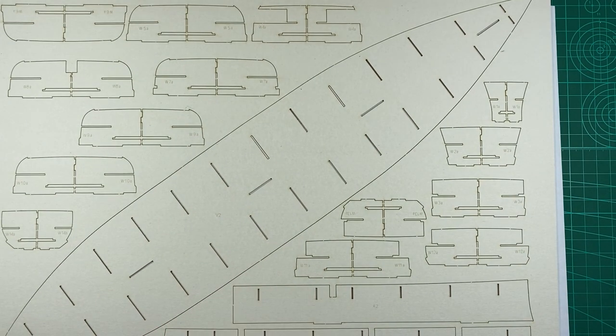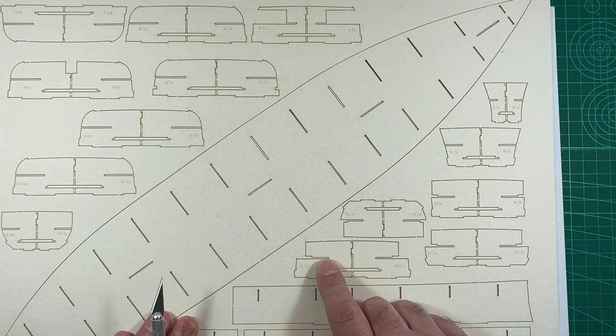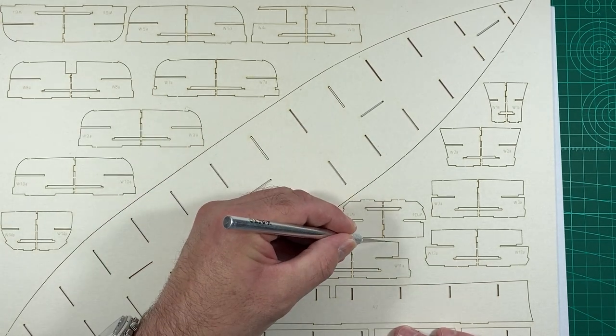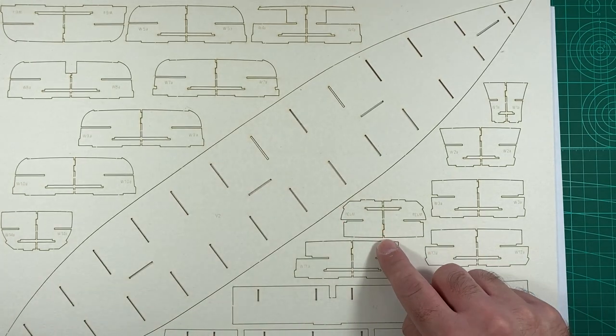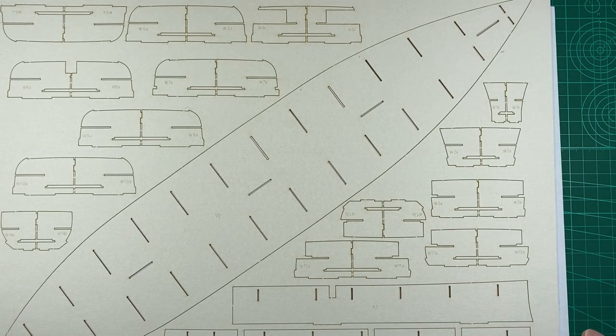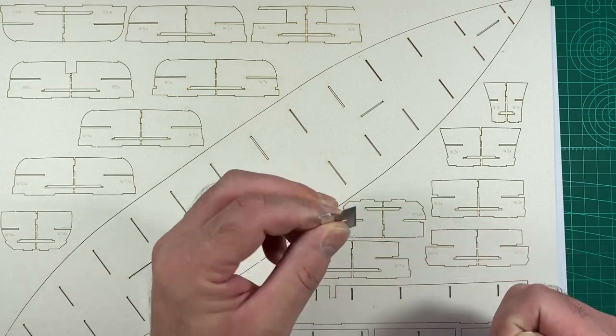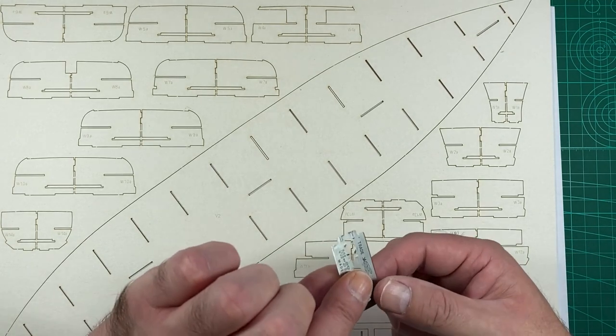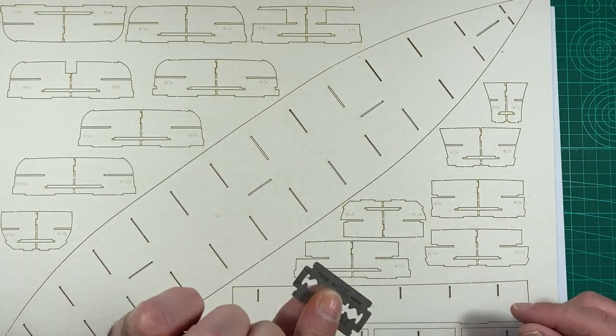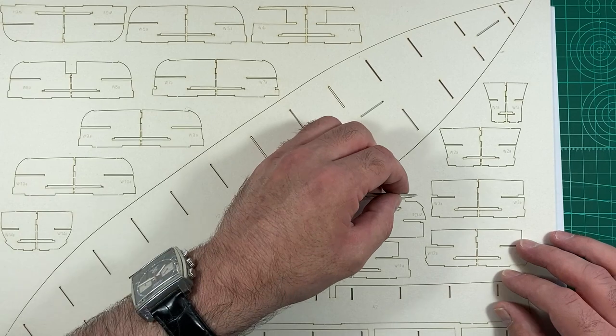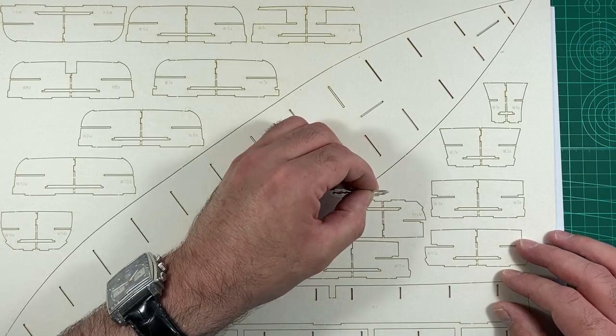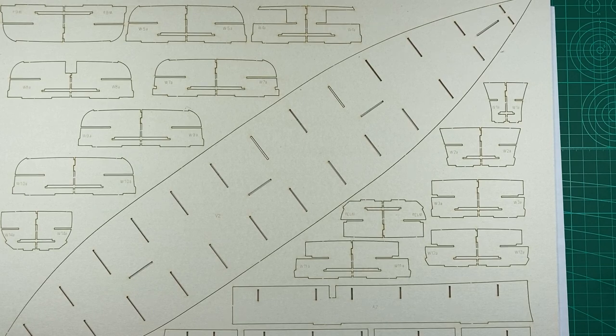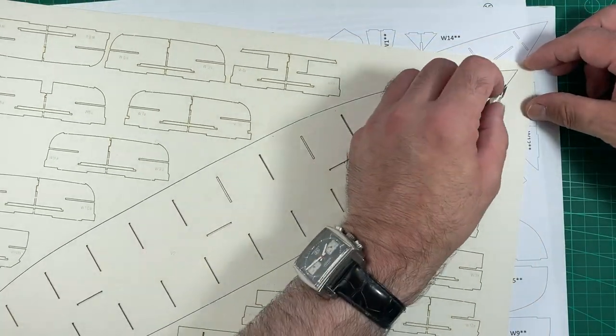Actually cut them out rather than pop them out. You've got a number of methods. You could use a normal number 11 craft knife and just cut through the little tabs. Alternative way you could use like a single-edged razor, or my preferred method is to use a double-edged safety razor. Just be very careful though because these are very sharp for shaving.